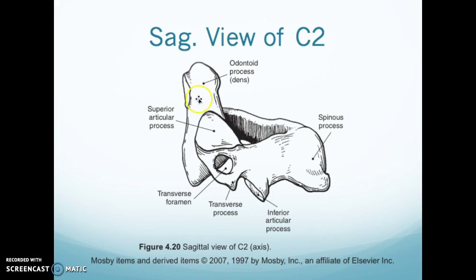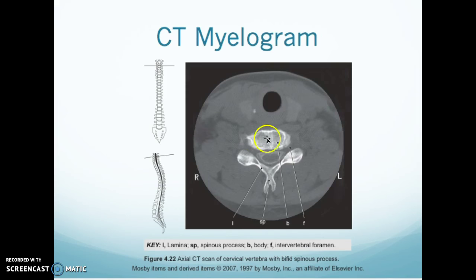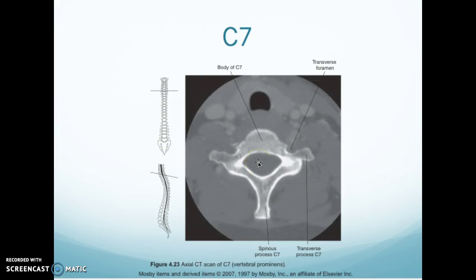On a sagittal view of C2, the part that sticks up is your dens. You have the superior articular process, your spinous process, your transverse process with your transverse foramen, and your inferior articular process. C3 through C7 have the same structure: your body, your transverse foramen with your pedicle, a superior articular process with your lamina, and your bifid spinous process — 'bifid' meaning two-part.